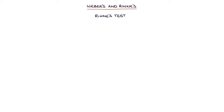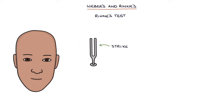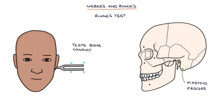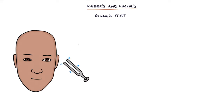Next, let's talk about Rinne's test. Strike the tuning fork to make it vibrate and hum, then place the flat end on the mastoid process — the bony lump behind the ear — and this tests for bone conduction. The sound will be transmitted through the bones straight into the cochlea and the patient will hear a humming noise. Ask the patient to tell you when they can no longer hear the noise, then remove the tuning fork while it's still vibrating and hover it one centimeter from the same ear. Ask the patient whether they can hear the sound — this tests air conduction. Then repeat the whole process on the other side.